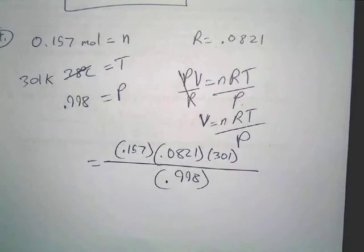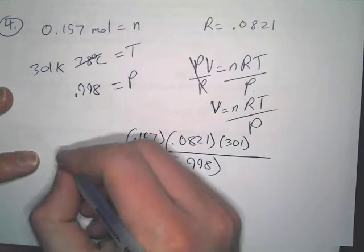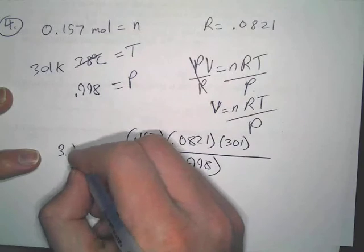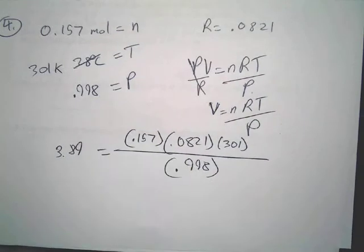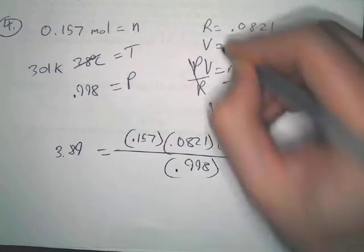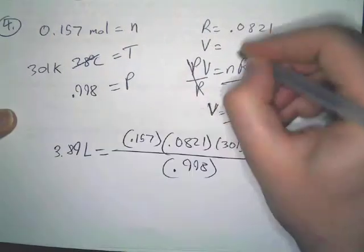What does that come out to be? What? 3.89? 3.89? Okay. Now, since we didn't write the units in, though, we've got to think about this. We solve for volume. What are our units for volume always in? Liters. Always liters.